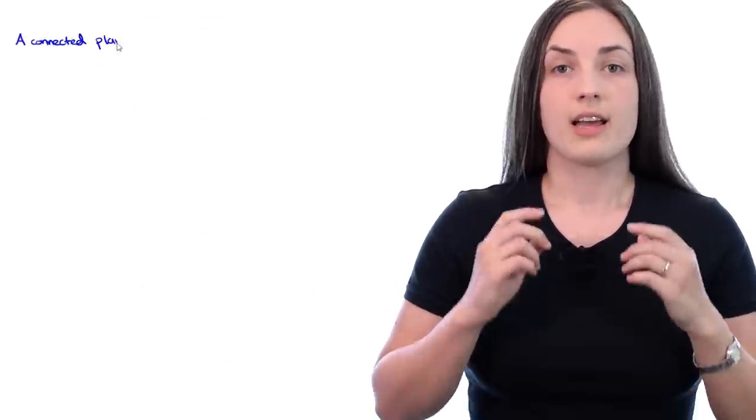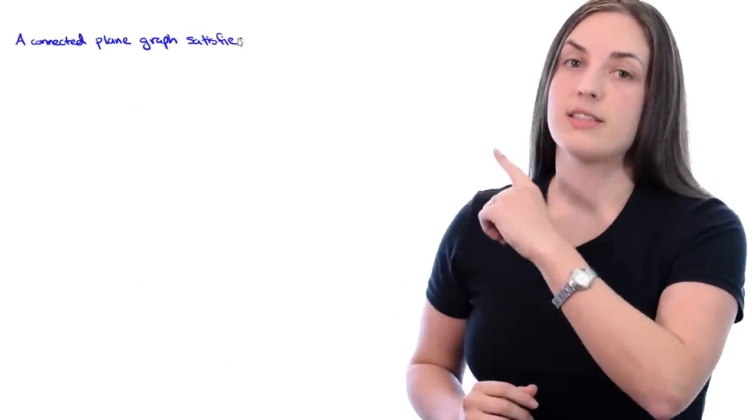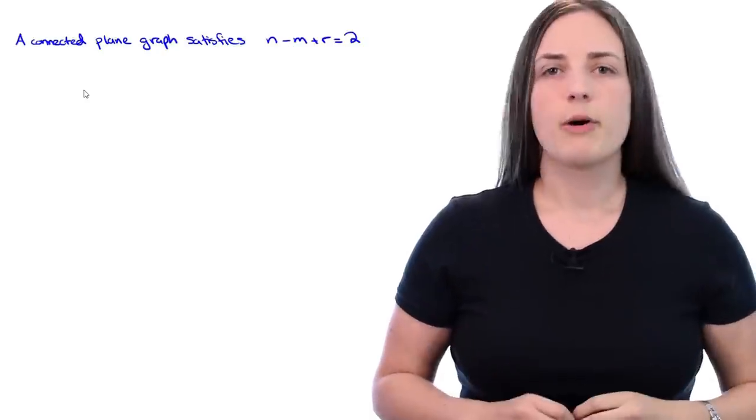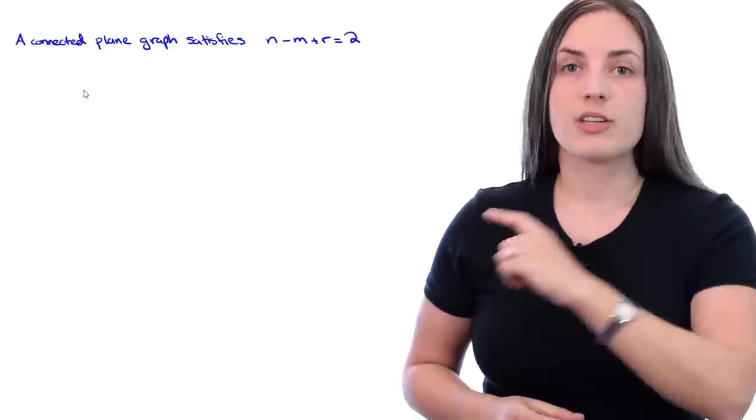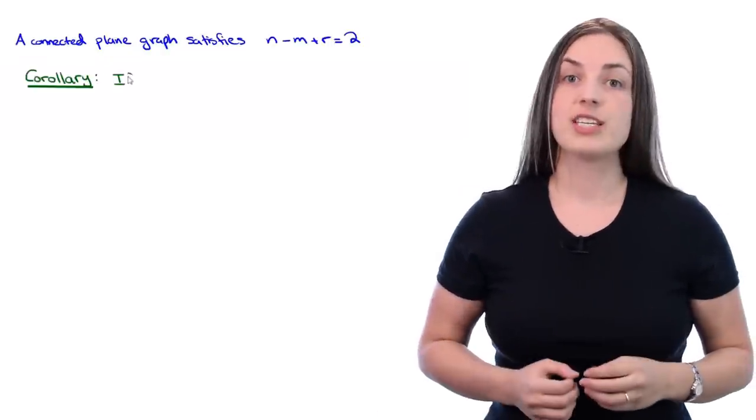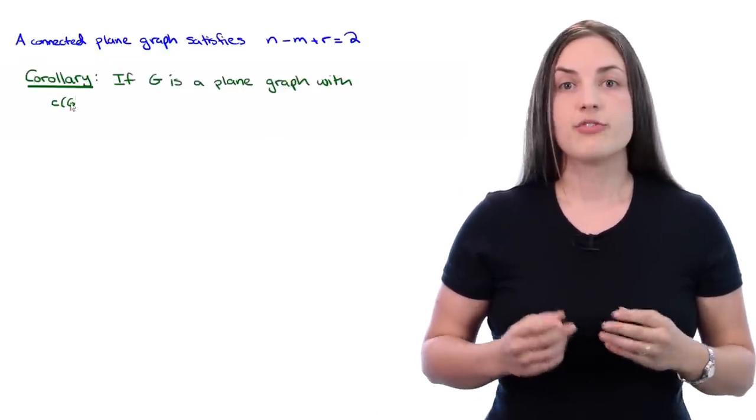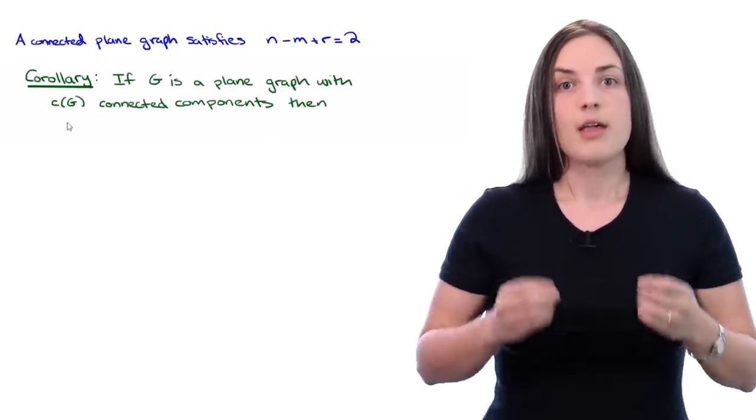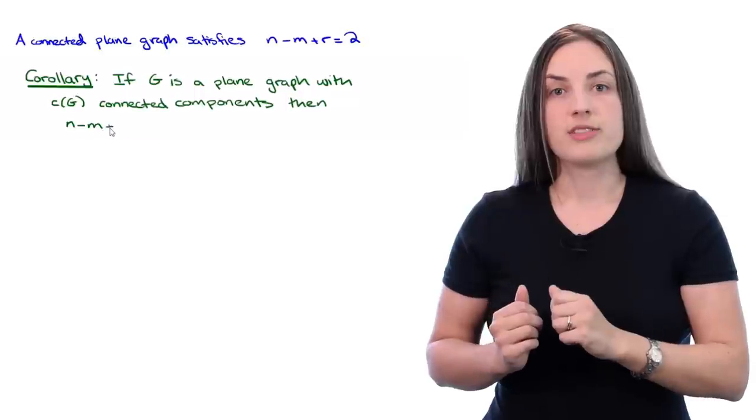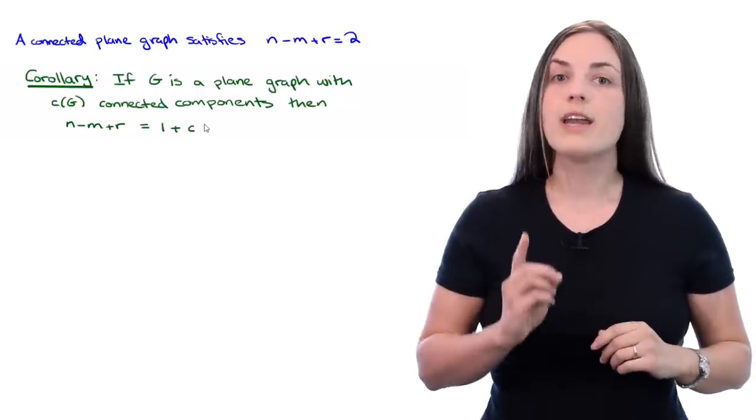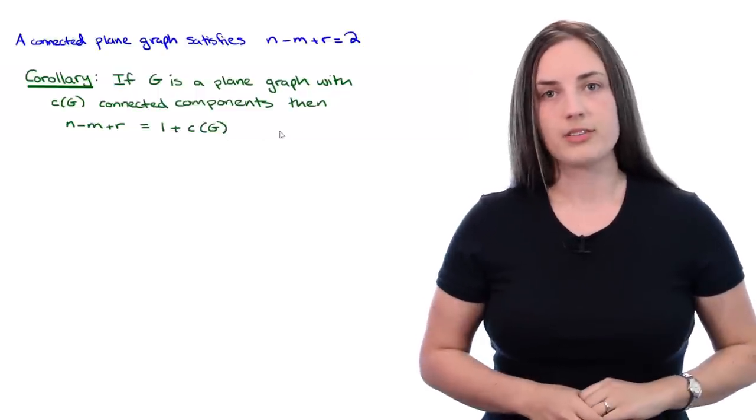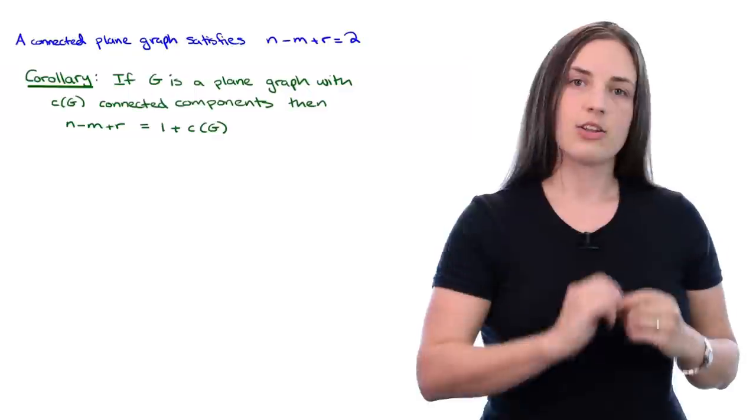So to recap, we know that a connected plane graph satisfies this equation. What about a disconnected plane graph? This theorem actually does generalize. If G is a plane graph with C of G connected components, then N minus M plus R equals one plus the number of connected components.